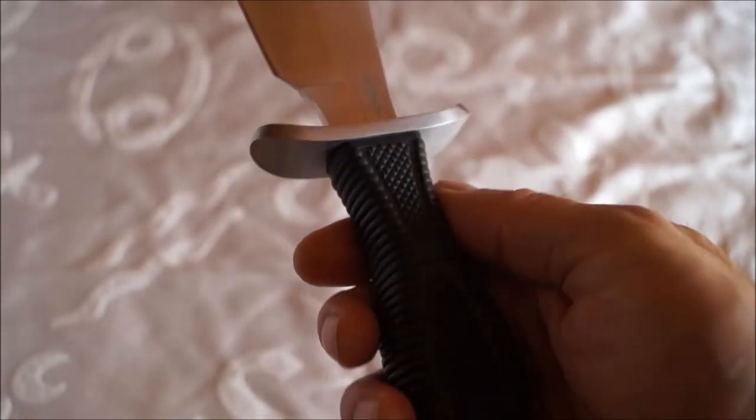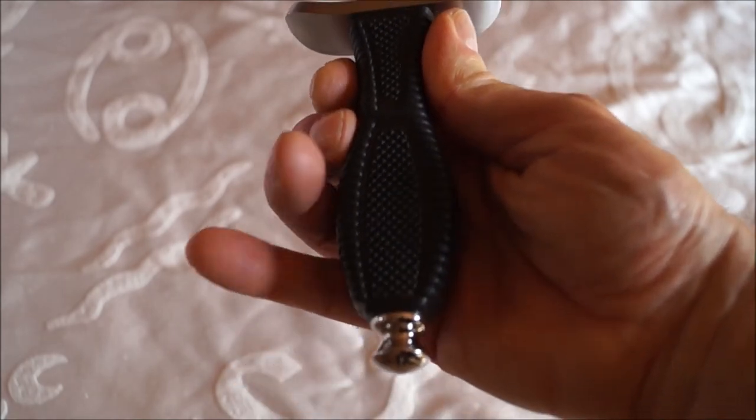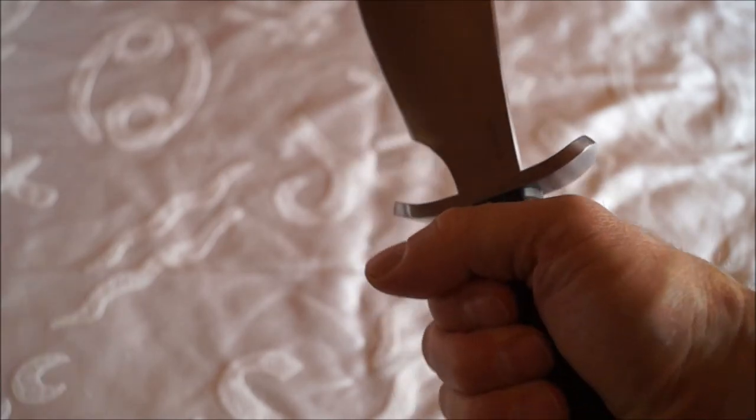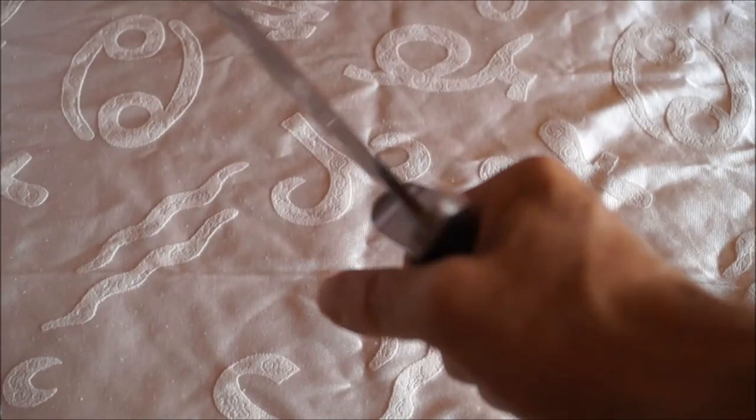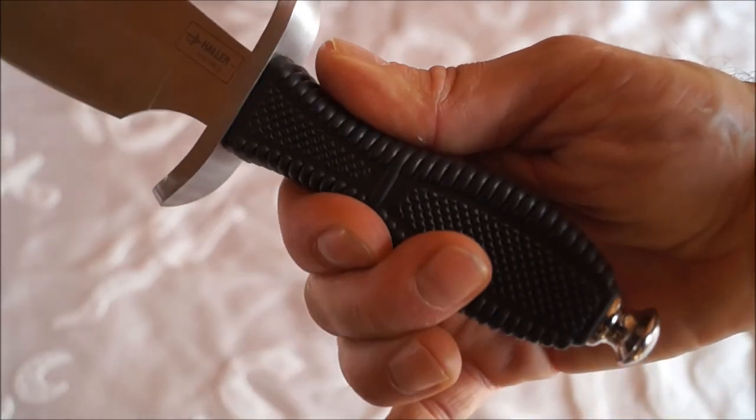Die Griffform hat oben eine Taille und unten eine starke Hüfte. Das passt sich gut der Hand an. So ergibt sich ein abrutschsicherer Griff.